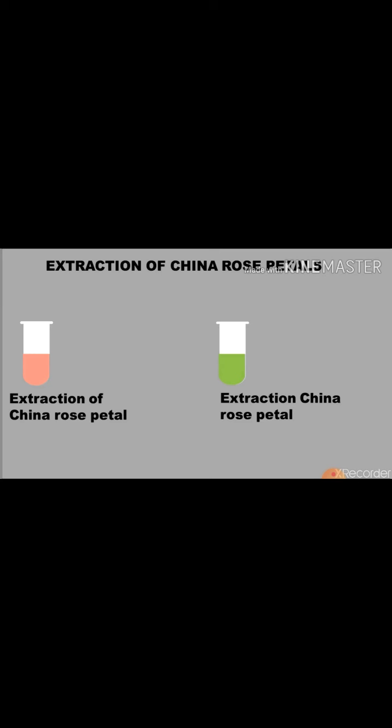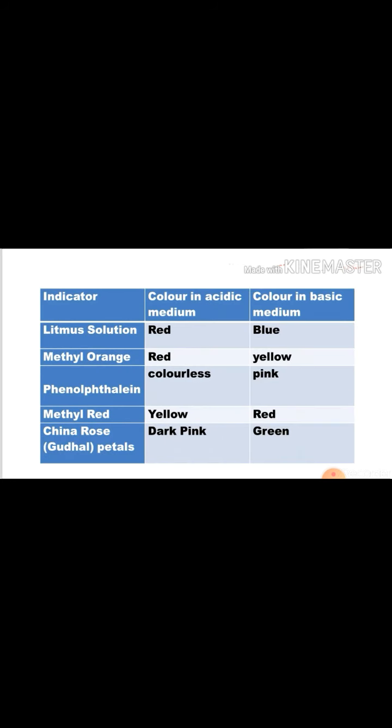Here is a list of some acid and base indicators. Litmus solution gives red color in acidic medium and blue in basic medium. Methyl orange gives red color in acidic medium and yellow in basic medium. Phenolphthalein remains colorless in acidic medium and gives pink color in basic medium. Methyl red gives yellow color in acidic medium and red in basic medium. China rose petals give dark pink in acidic medium and green color in basic medium.